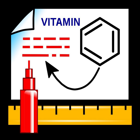ACD/ChemSketch is a molecular modeling program used to create and modify images of chemical structures. It is a software that allows molecules and molecular models to be displayed in two and three dimensions, to understand the structure of chemical bonds and the nature of the functional groups.